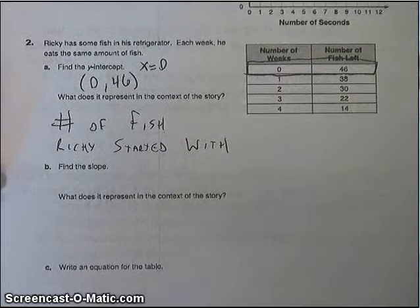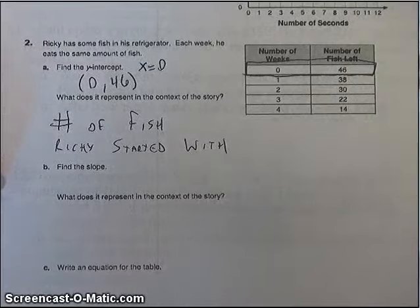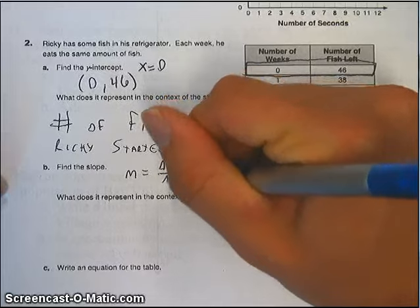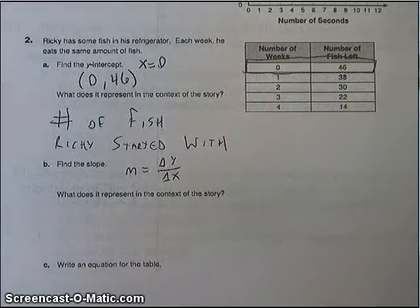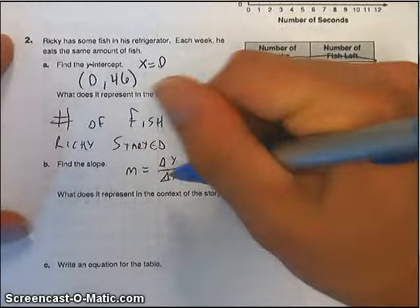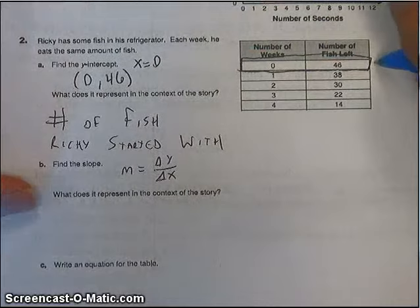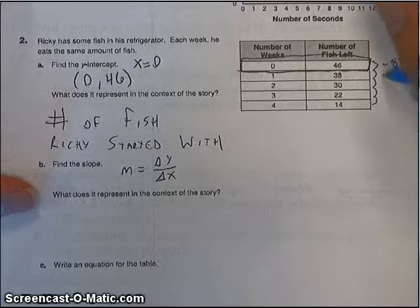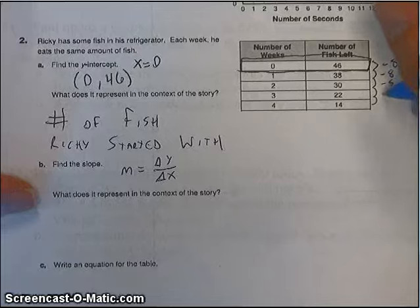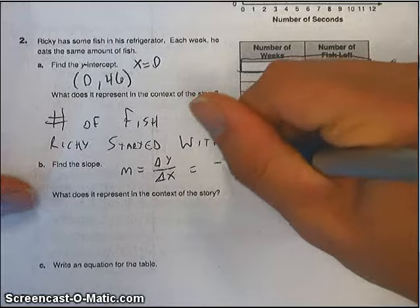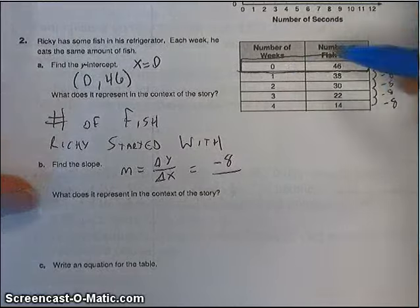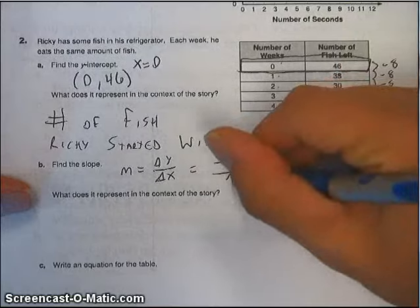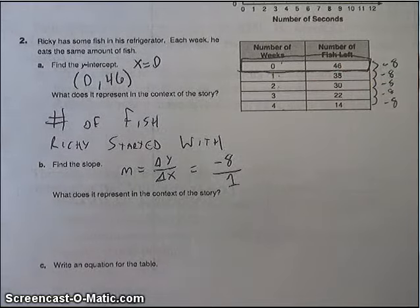Alright, so next thing we're supposed to do is find the slope. And slope, remember, is change in y over the change in x. Delta y, delta x. Remember that delta symbol just means change. So I'm looking at these y's here, and it looks like they're all going down by 8. So that delta y is negative 8. The change in x, it's going up by 1 every time, right? Up by 1. So the change in x is just 1.